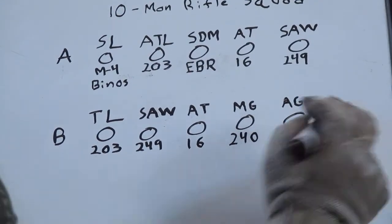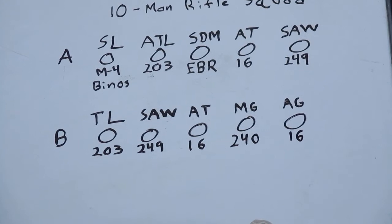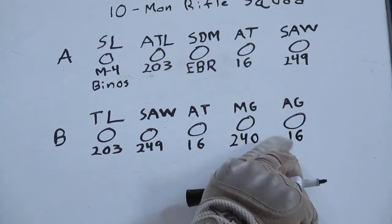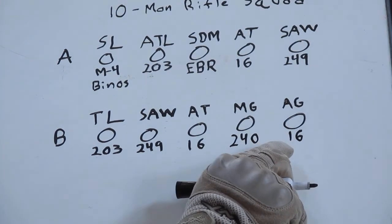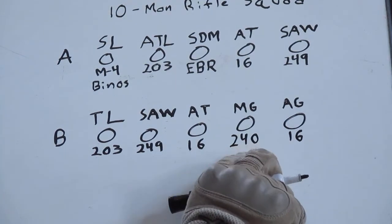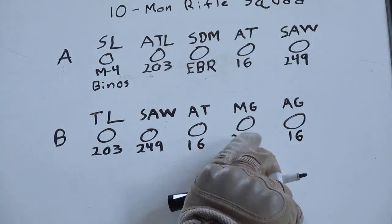The assistant gunner should also carry a rifle. So we'll give him an M-16. He also carries extra ammunition for the machine gunner, and the spare barrels, and the tripod. The machine gunner should have the cleaning kit for that weapon.